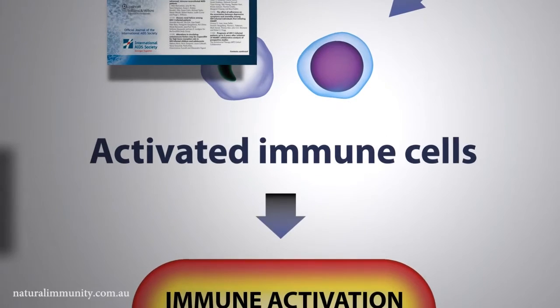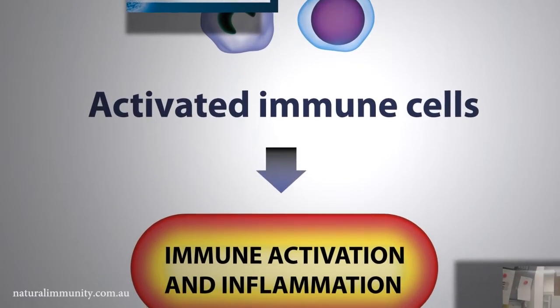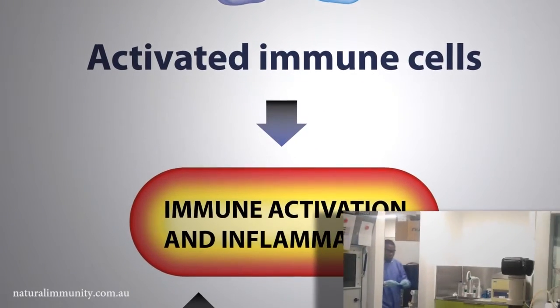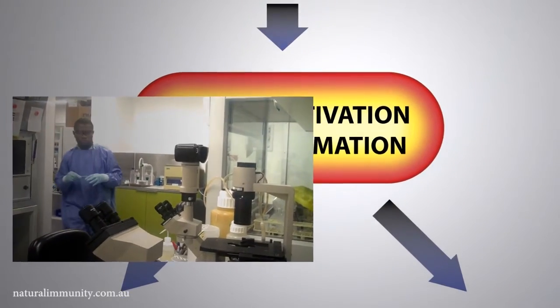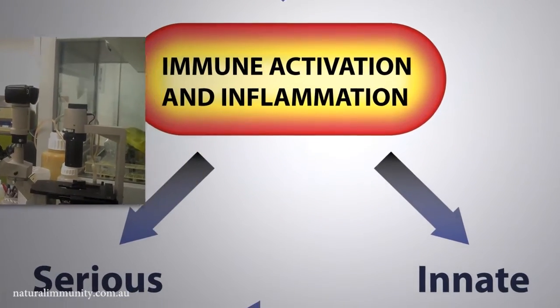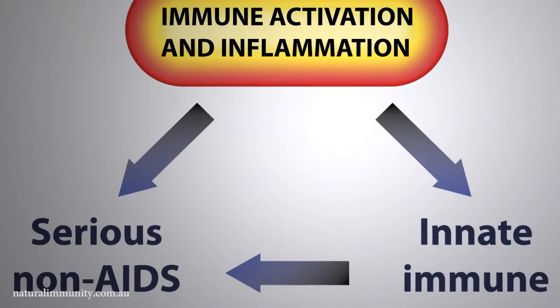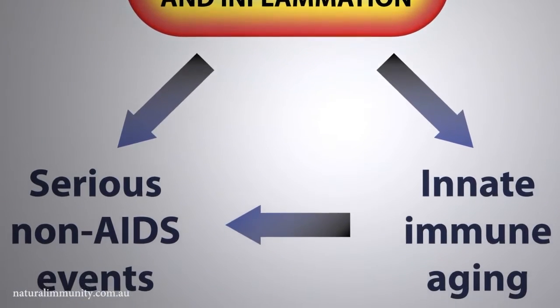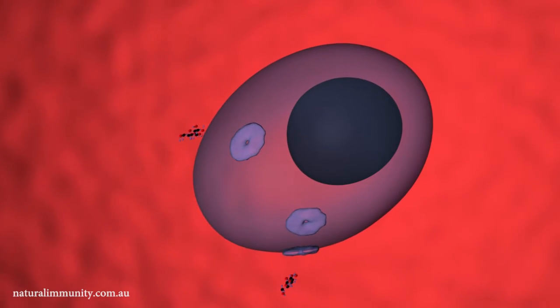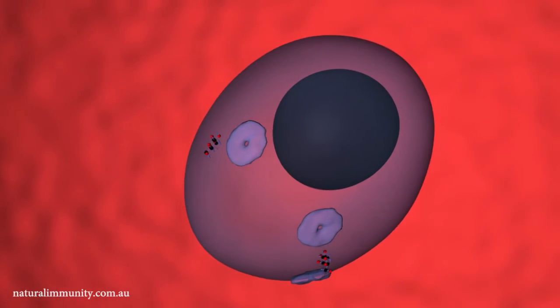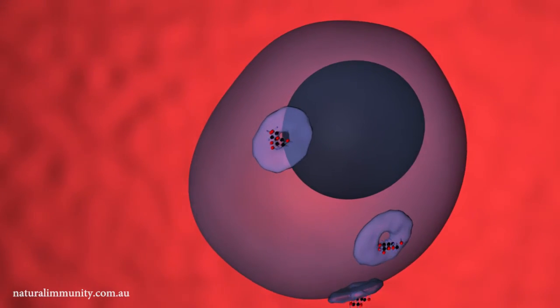The team, led by Chief Investigator Dr. Clovis Palmer, proposed a new model of how CD4 T-Cells are destroyed in people infected with HIV. In healthy persons, immune cells such as CD4 T-Cells take up low levels of glucose through a protein known as glucose transporter 1, GLUT1.